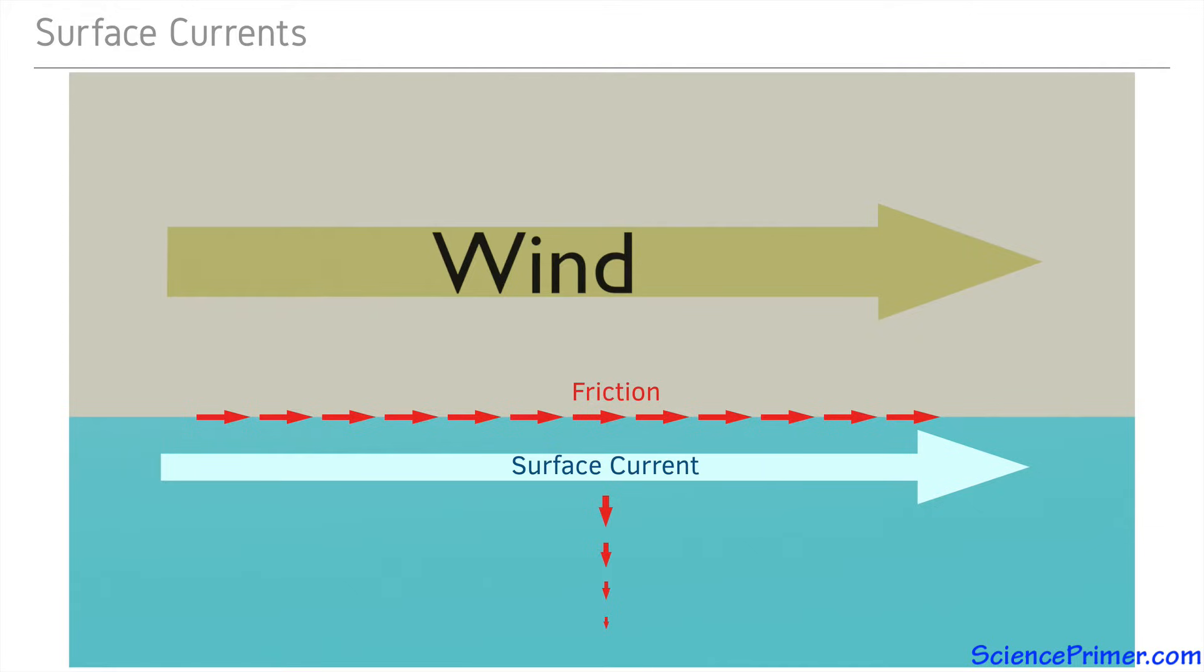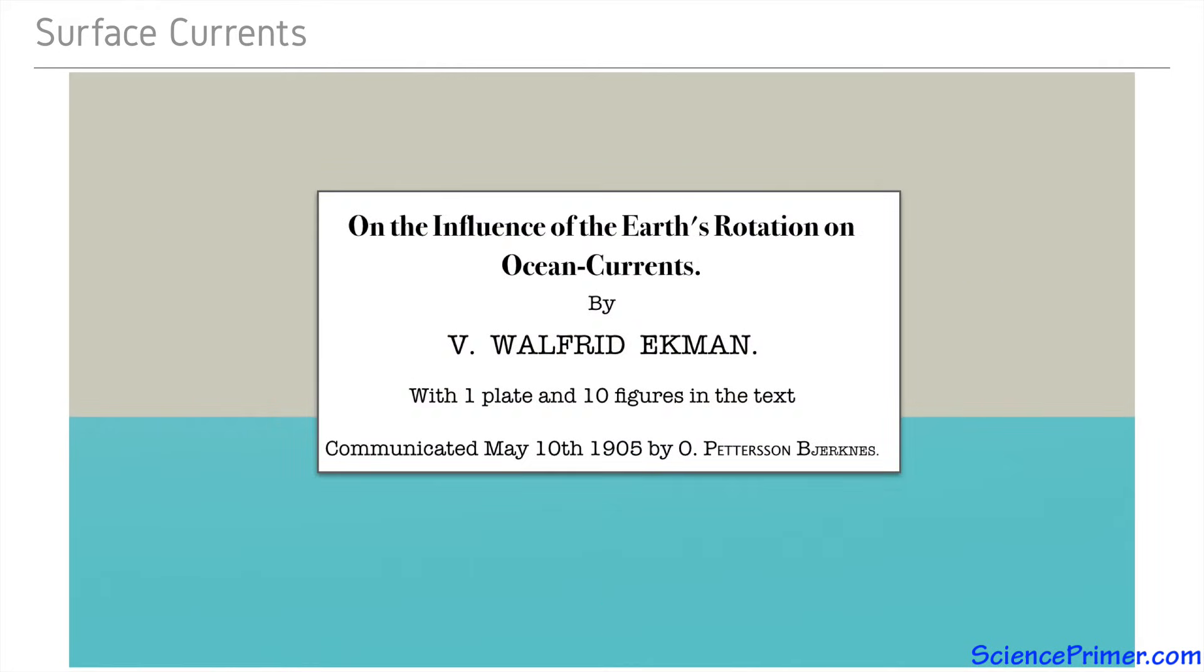The details of how water behaves as energy from wind moves from the surface to depth was first investigated by Walfred Ekman in 1905. He was given the idea to investigate surface currents by the arctic explorer Fridtjof Nansen.